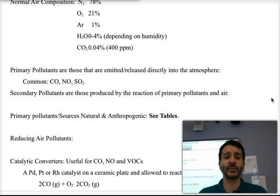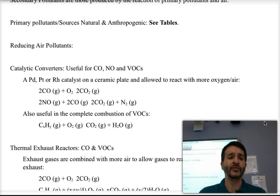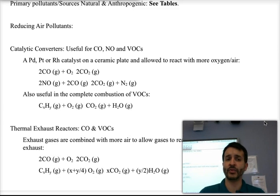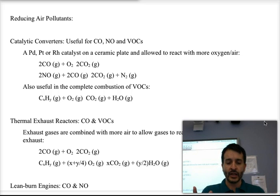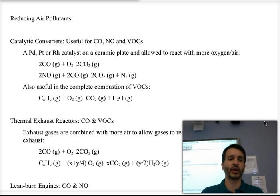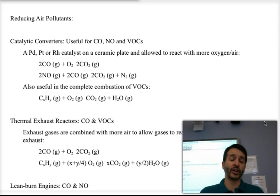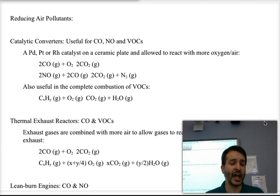I want to spend some time talking about how we can reduce air pollutants. The very first one is the idea of using catalytic converters. Catalytic converters are basically heterogeneous reactions that take place as you pass hot gases over palladium, platinum, rhodium, or iridium — those are normally the metals we put in the exhaust system of our cars.